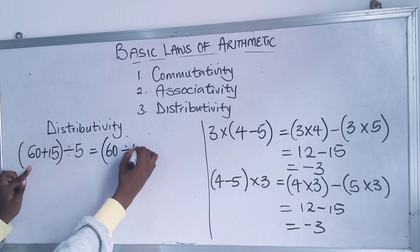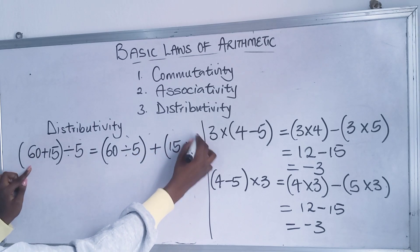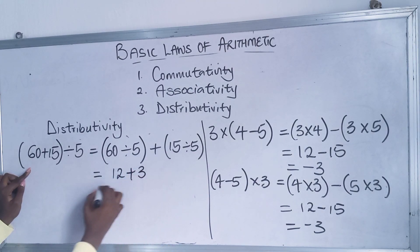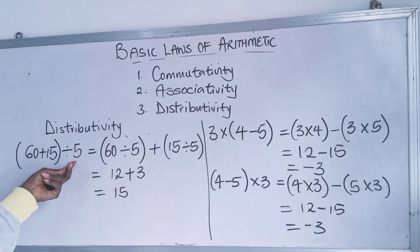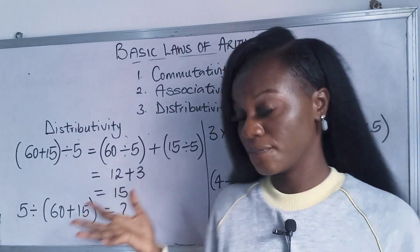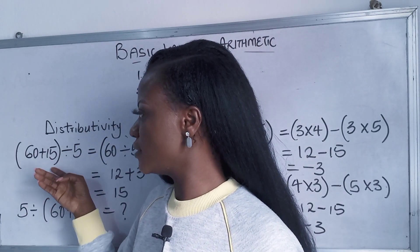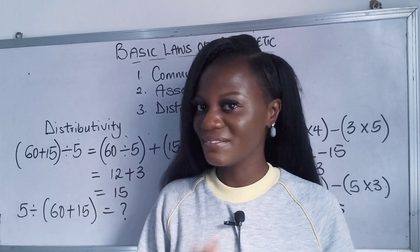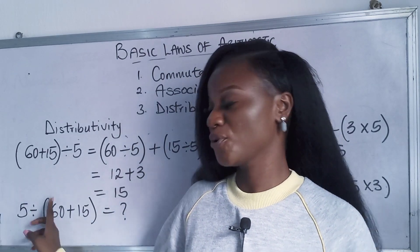Now let's distribute division over addition. We have 60 divided by 5 plus 15 divided by 5. So 60 divided by 5 is 12, plus 15 divided by 5 is 3, giving you 15. Division can be distributed from the left. Now try the version distributed from the right at home and see if you also get 15.